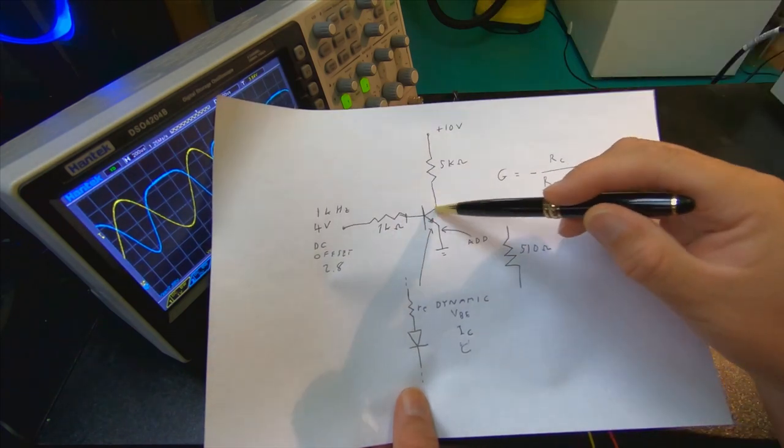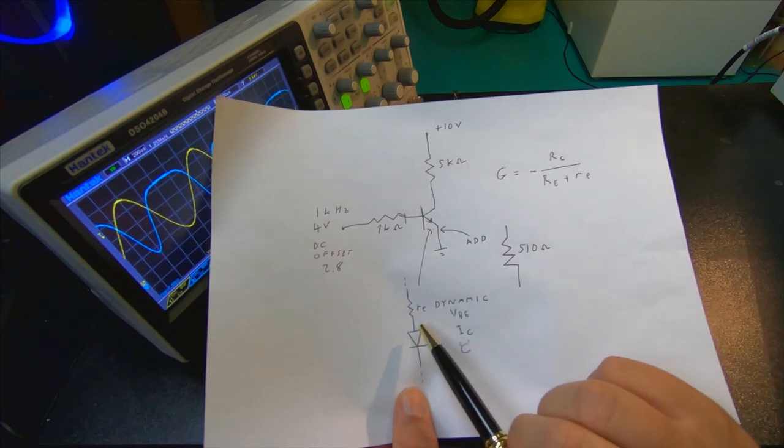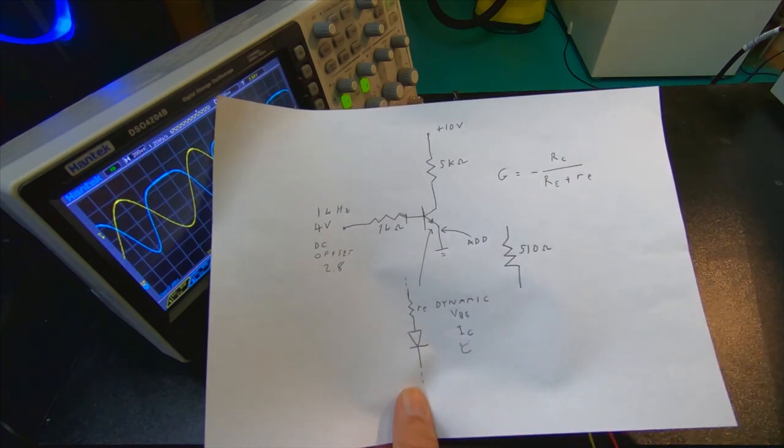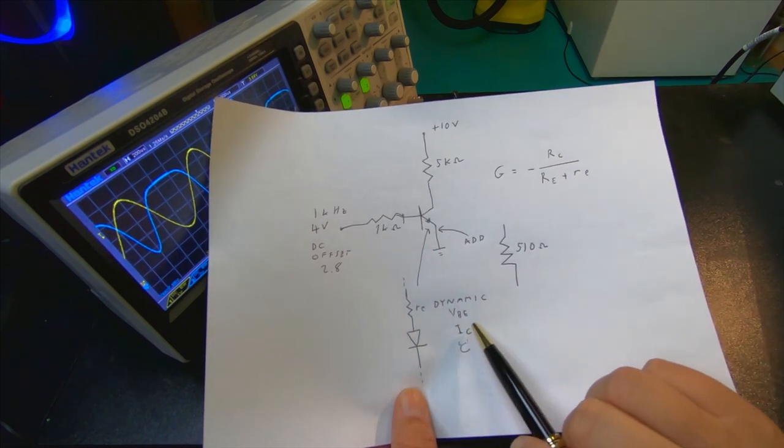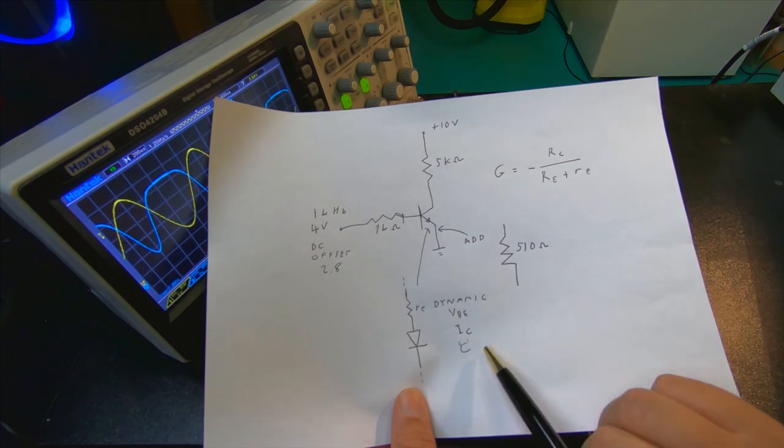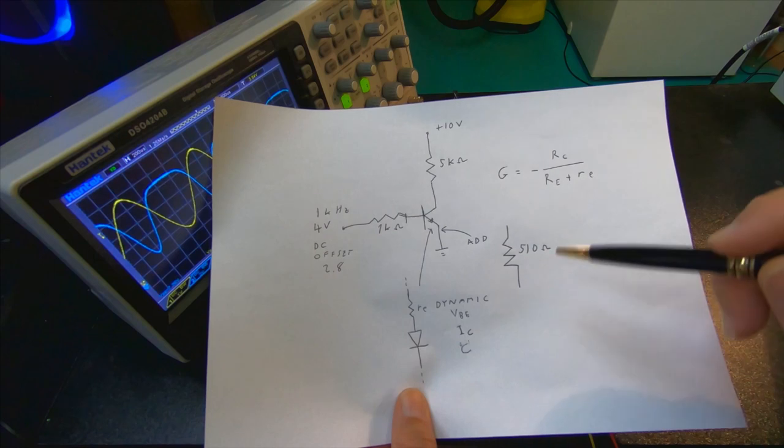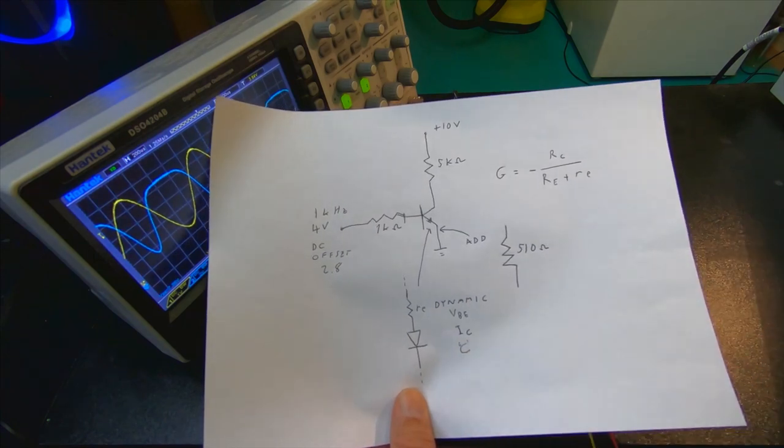So basically, the base-emitter simplistically looks like this: you have a so-called small RE, and then a diode. This RE is dynamic, so it varies based on the base-to-emitter voltage, collector current, and also temperature, though that's not so important for the circuit on the table.